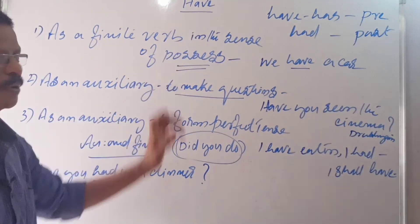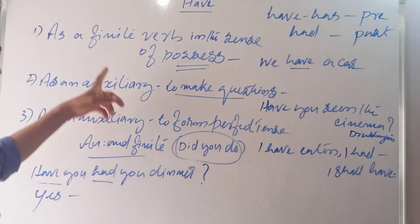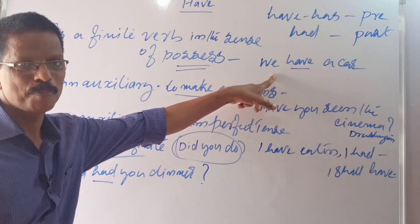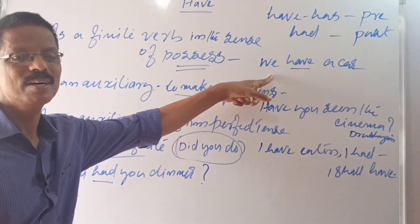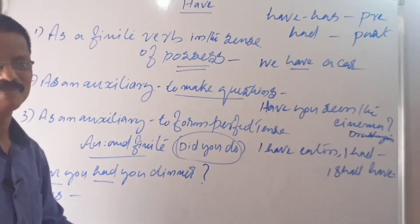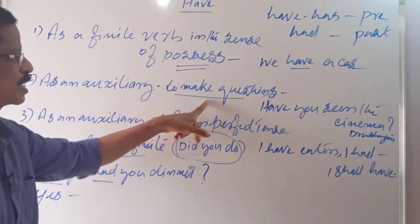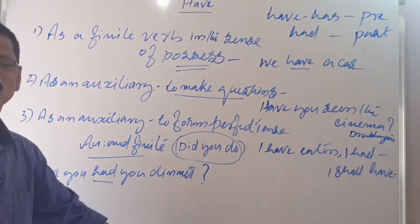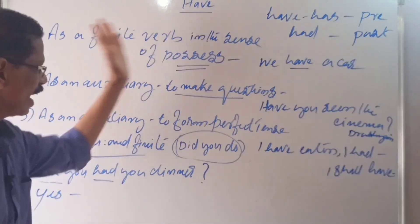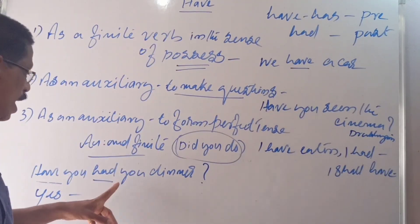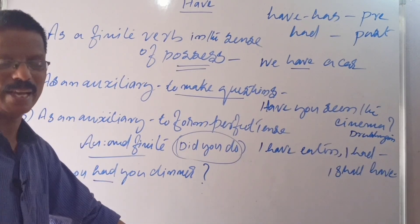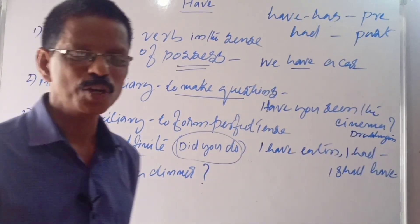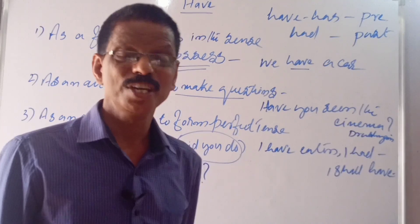The use of have. Mainly three uses. Number one, as a finite verb in the sense of possess. Possession means ownership. Second one, to make questions. Third one, to form perfect tense. These three are the most important uses of have. And above all, when you offer someone something, have it please. I hope it is clear to you. Thank you for watching. For more updates, subscribe channel SGK English. Thank you.